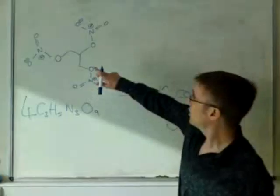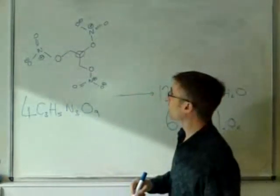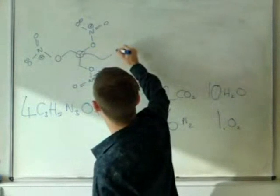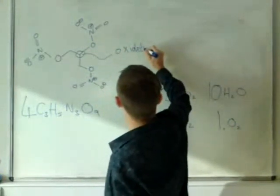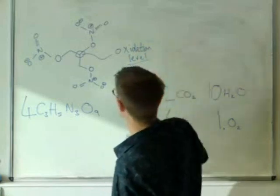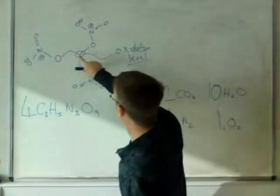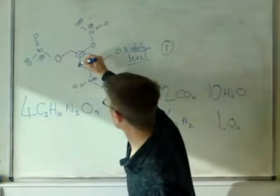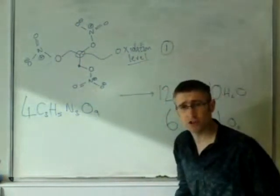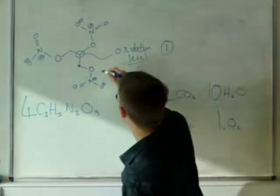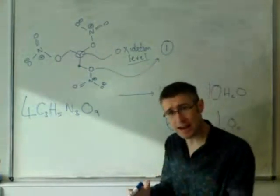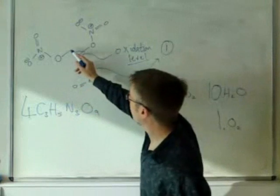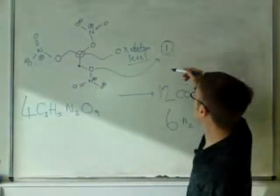Look at this carbon here. This carbon is bonded to one oxygen; it has one bond to a heteroatom. If we look at this carbon, it's bonded to two hydrogens, a carbon, and an oxygen. Once again it has one bond to a heteroatom, so it has an oxidation level of one. This carbon here, exactly the same thing, it has one bond to a heteroatom. The oxidation level is one.